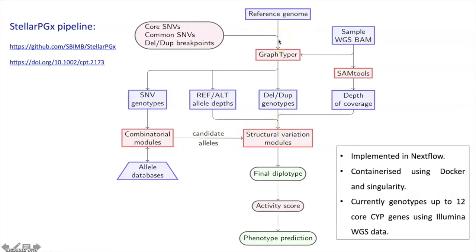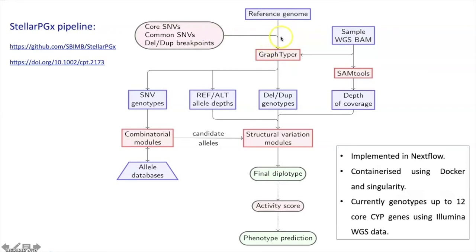Talking about the graph-based variant detection: most of the time variant calling is based on using a linear reference genome. However, in StellarPGX, we use a tool called Graphtyper, which uses known variants and augments them to the reference genome to form a graph structure, and then realigns the reads to that graph structure. By doing that, it improves the read alignment quality and also the variant calling confidence.